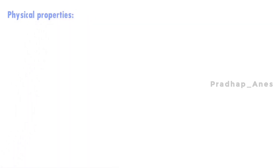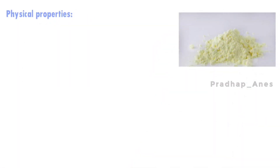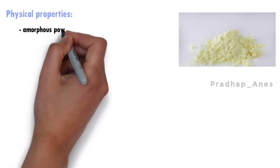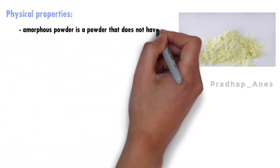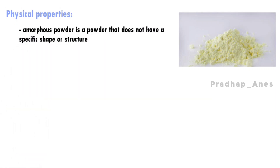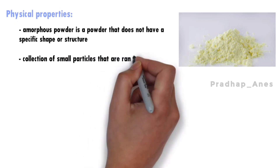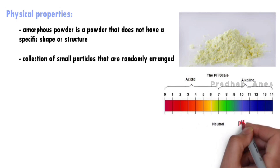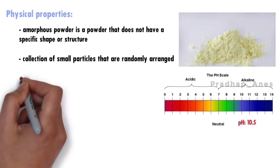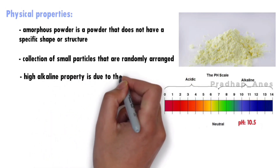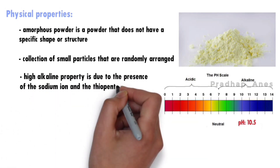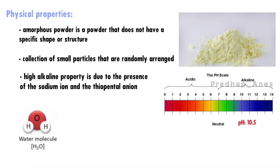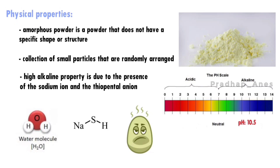Physical Properties: Thiopentone sodium is available as a yellow amorphous powder. An amorphous powder does not have a specific shape or structure — it is not made up of crystals or grains, but rather a collection of small particles that are randomly arranged. It is a highly alkaline solution with a pH of 10.5. This high alkalinity is due to the presence of the sodium ion and the thiopentone ion, which attract hydrogen ions from water molecules, resulting in the formation of hydrosulfide ions and an increase in pH. As hydrosulfide forms, it smells like hydrogen sulfide, often described as similar to rotten eggs or sewage.